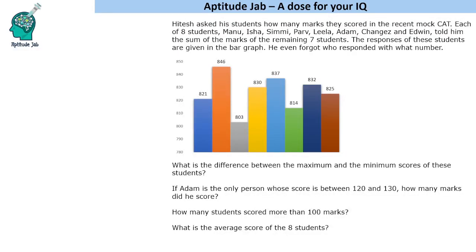Welcome to aptitude. In this problem, there are eight students who got different marks in a mock test. Instead of revealing their own score, each student tells the sum of the marks of the remaining seven students. So if you ask Manu, Manu tells the sum of the other seven students' scores. The responses of all eight students are given in a bar graph, but it is not mentioned which student told which number.